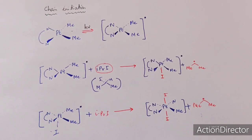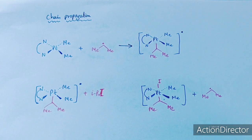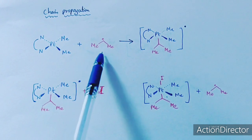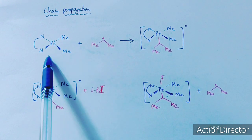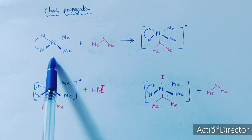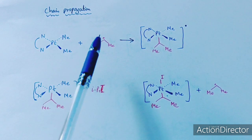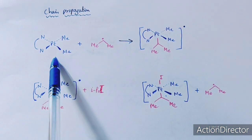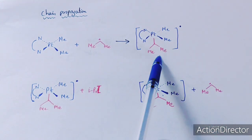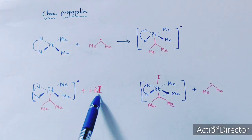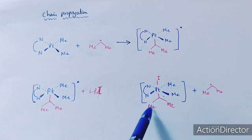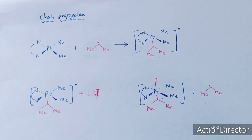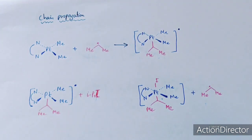This is followed by the chain propagation step. The generated isopropyl radical can react with the initial material or with intermediate species. This generated free radical can react with the initial material, forming again a free radical, which can react with the reagent again to form isopropyl free radical — and thus this reaction proceeds through a chain reaction.